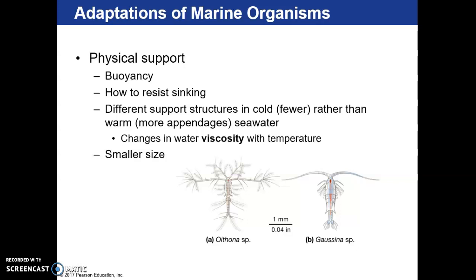We also talk about how physical support is adapted to the marine environment. All creatures are buoyant to some degree — some sink and float more easily than others. This buoyancy allows them to swim through the water instead of just sinking or floating. We call this neutral buoyancy, where at some depth they reach an equilibrium and can swim up and down from there, resisting sinking like a rock.